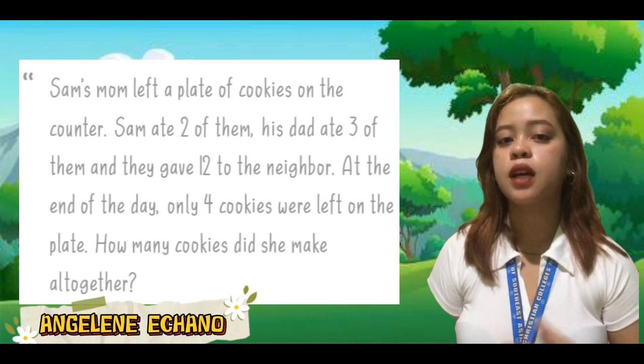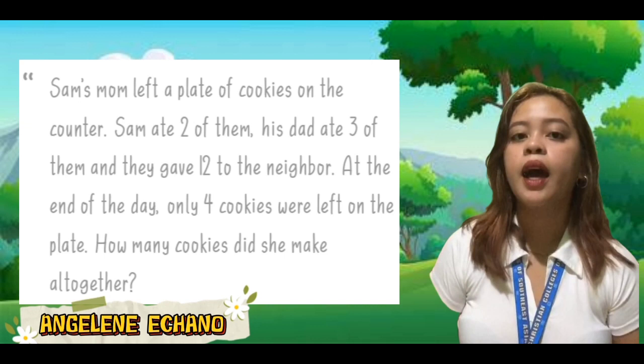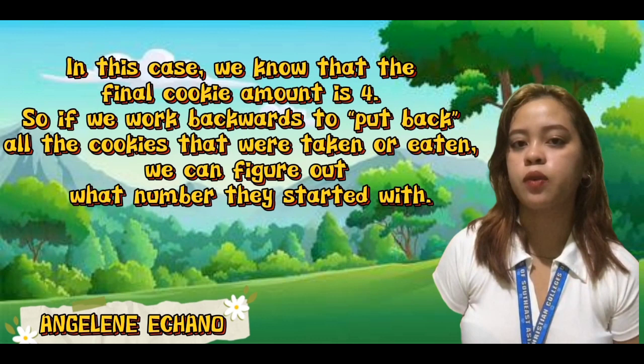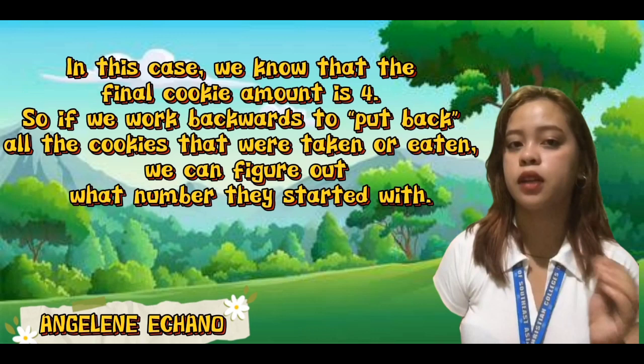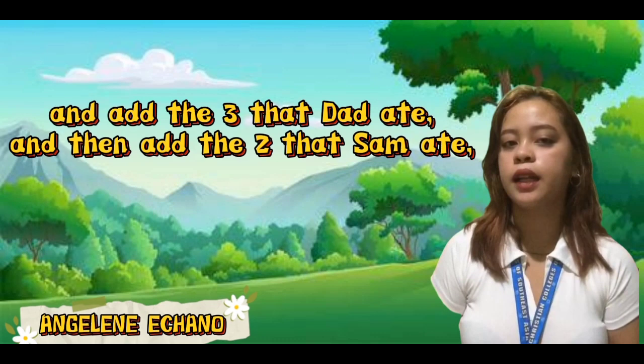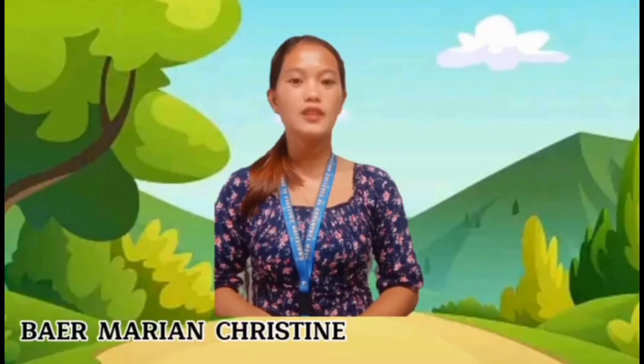Here's an example: Sam's mom left a plate of cookies on the counter. Sam ate two of them, his dad ate three of them, and they gave 12 to the neighbor. At the end of the day, only four cookies were left. How many cookies did she make altogether? We know the final amount is 4, so working backwards, we add back all the cookies taken. Because cookies were being taken away through subtraction, to get back to the original number we add. Four left, plus 12 given to neighbors, plus 3 dad ate, plus 2 Sam ate — Sam's mom made 21 cookies.